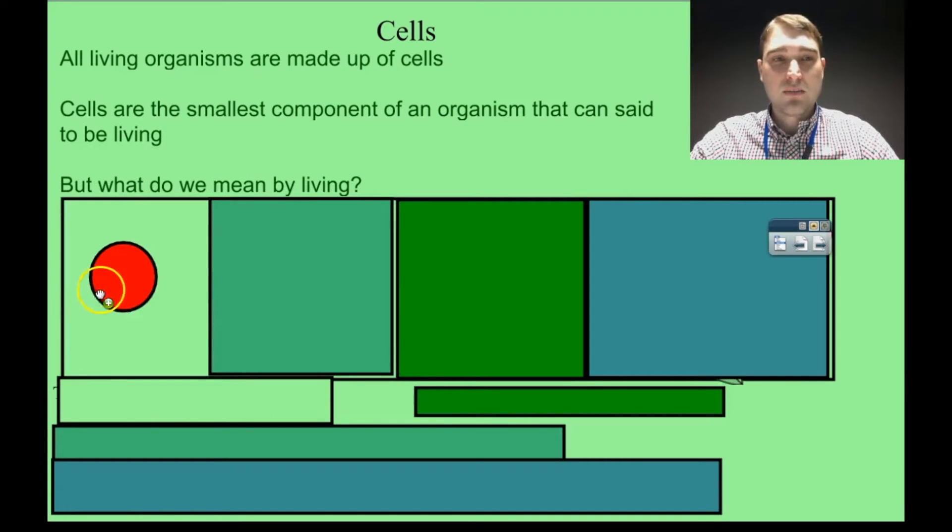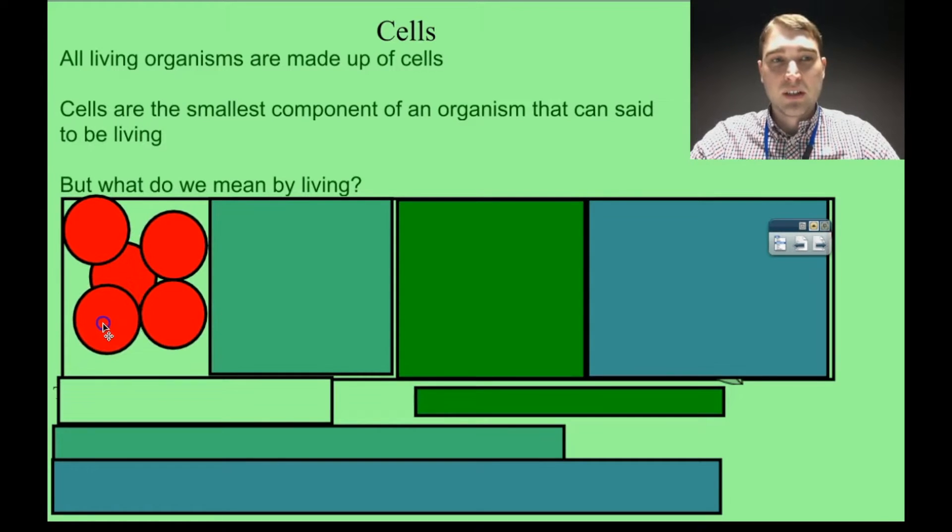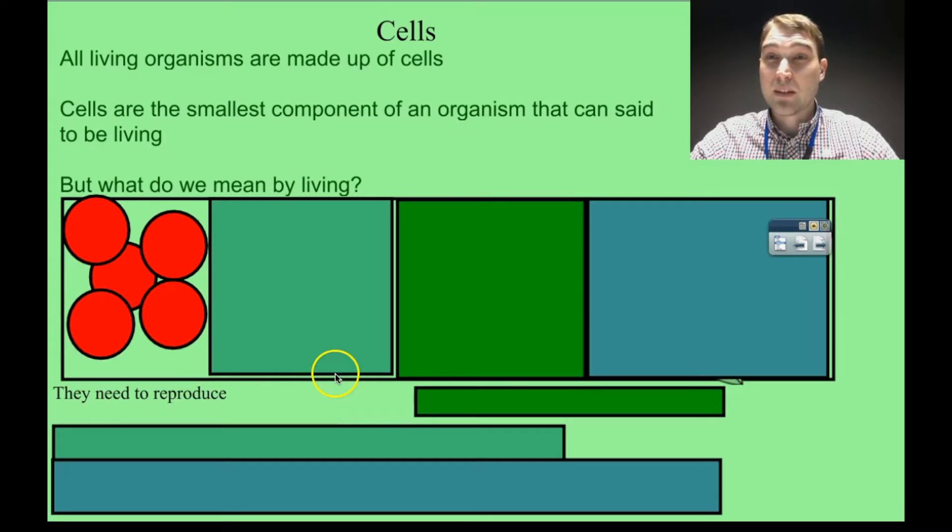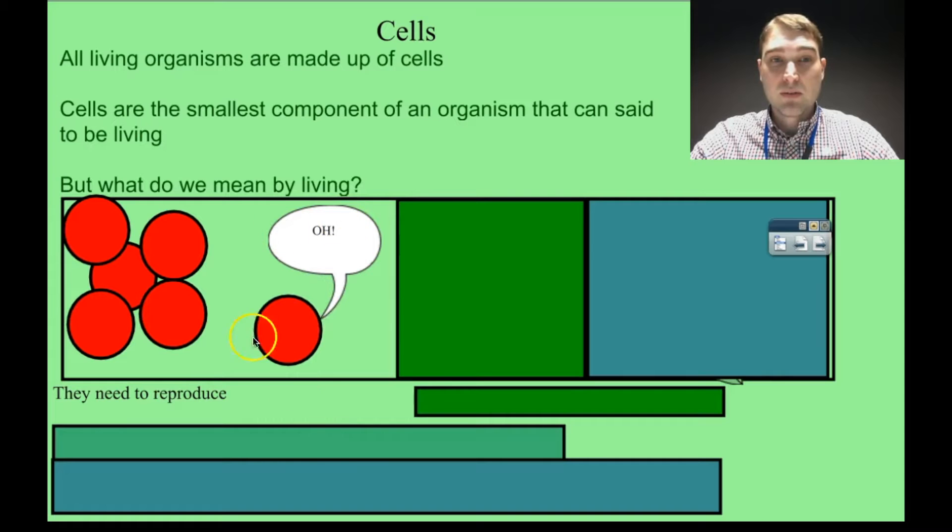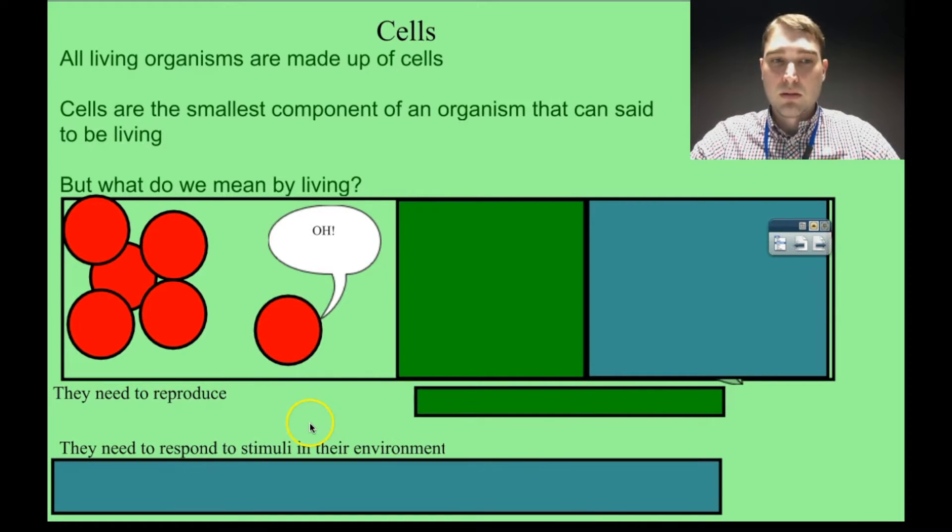I've got some pictures down here that represent the features of living things. This first one is reproduction. Something that's alive needs to be able to reproduce or at least have the opportunity to reproduce. This one, we've got a little cell saying 'Ow.' We're talking about responding to the environment, responding to stimuli in the environment.